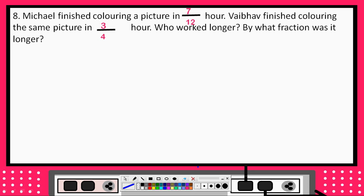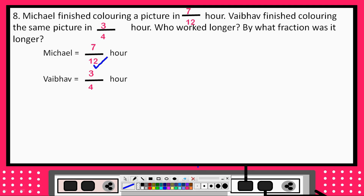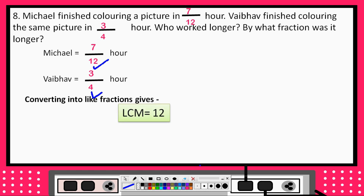The first question is: who worked longer? So Michael finished drawing a picture in 7 upon 12 hours, and Vago in 3 upon 4 hours. We need to find the same denominator. The denominators are 12 and 4, and we need to make them the same. The LCM of 12 and 4 is 12.